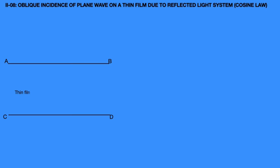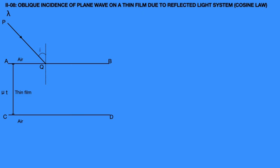Consider ABCD, a thin film of thickness T and refractive index mu, enclosed by an air medium. Consider a wavelength lambda of plane wave of light incident obliquely from P on the upper surface of the film AB at point Q. Draw a normal on the surface at that point. The light ray makes an angle I with the normal. At point Q, some part of PQ light ray is reflected along QR, making the same angle I. Hence, angle of incidence equals angle of reflection.